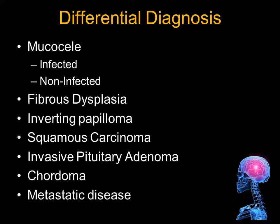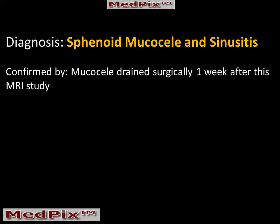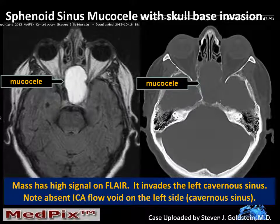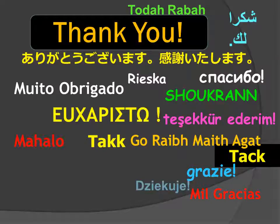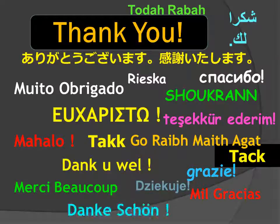The differential diagnosis would include, in addition to mucocele: fibrous dysplasia, inverting papilloma, squamous carcinoma, invasive pituitary adenoma, chordoma, and metastatic disease for a lesion involving the sphenoid bone. However, in our case, the lesion is homogeneous, and it was surgically treated with drainage of the mucocele. This has been a case of a sphenoid sinus mucocele complicated by enlargement, erosion, and skull base invasion involving the cavernous sinus. Thank you very much for your attention. I'm Jim Smyrniatopoulos, and I approve this message.